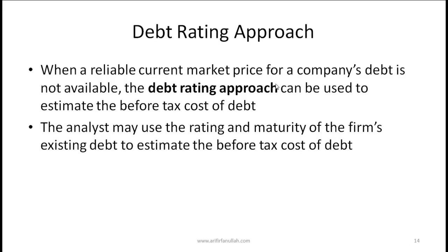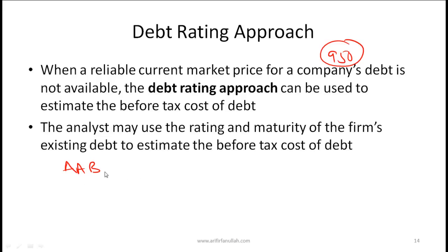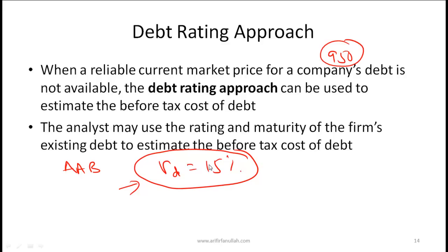The debt rating approach is used when a reliable current market price for a company's debt is not available. The analyst uses the rating and maturity of the firm's existing debt to estimate the before-tax cost of debt. For example, if the company's debt rating is double-A and other bonds with a similar rating and maturity have a cost of debt of 15%, then 15% is used as the proxy.